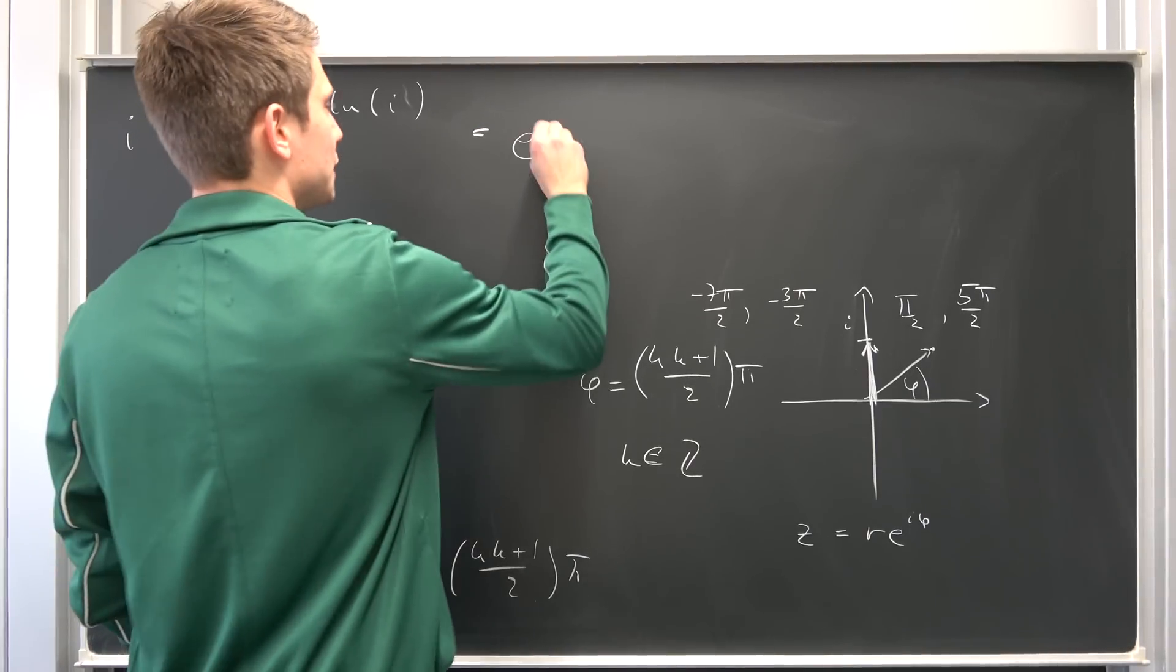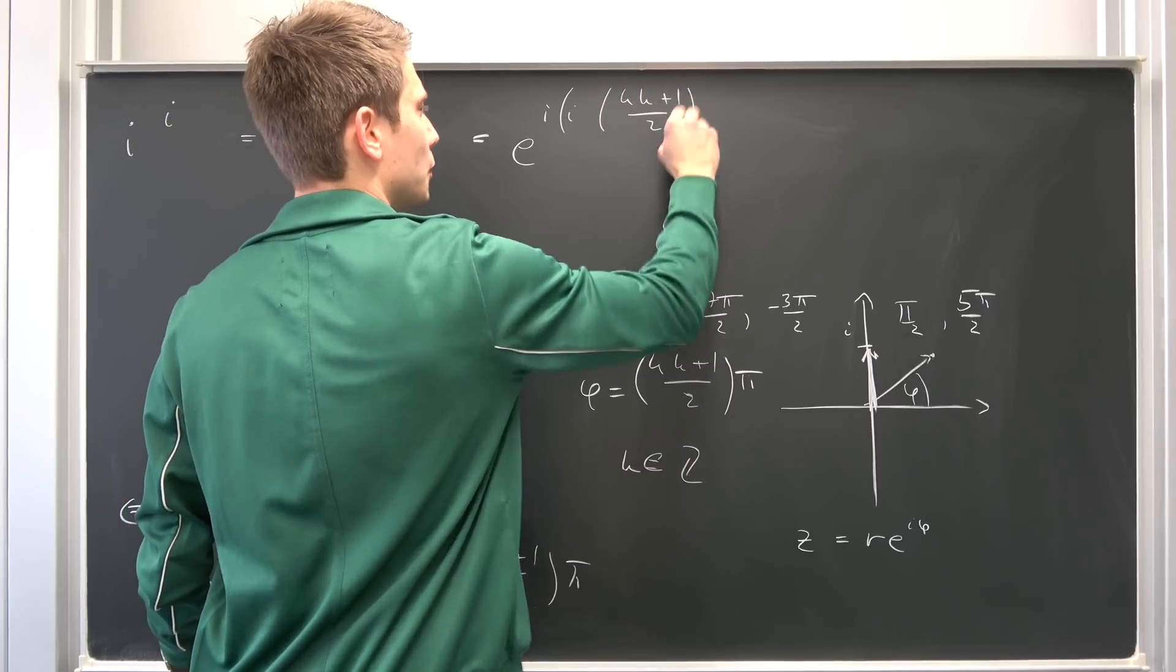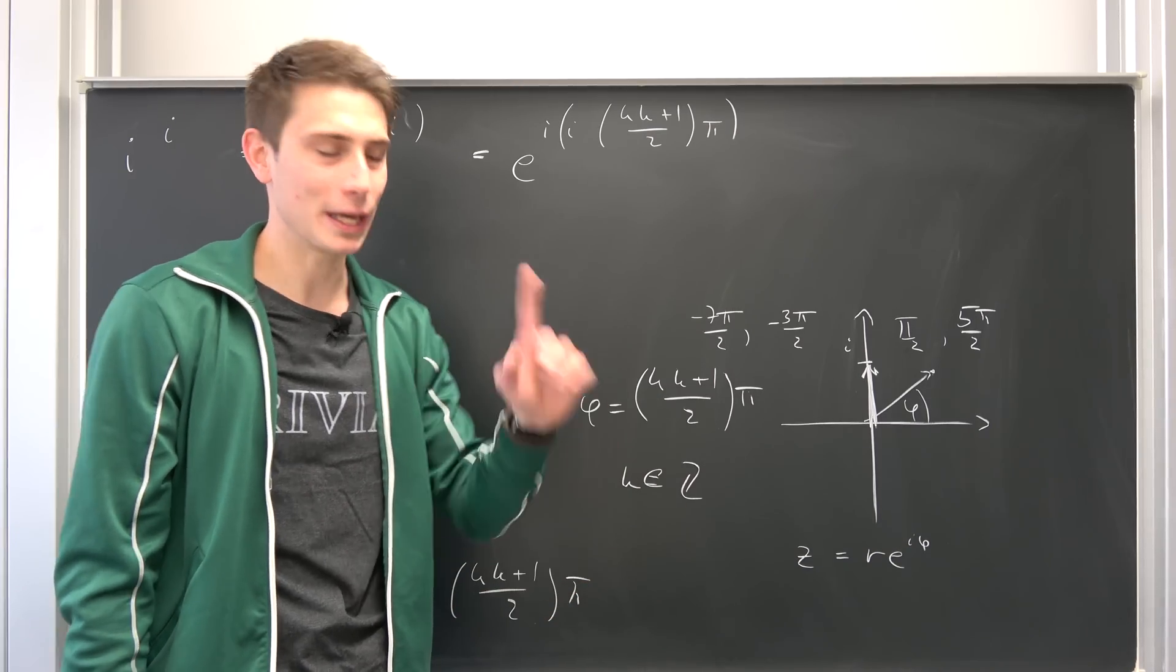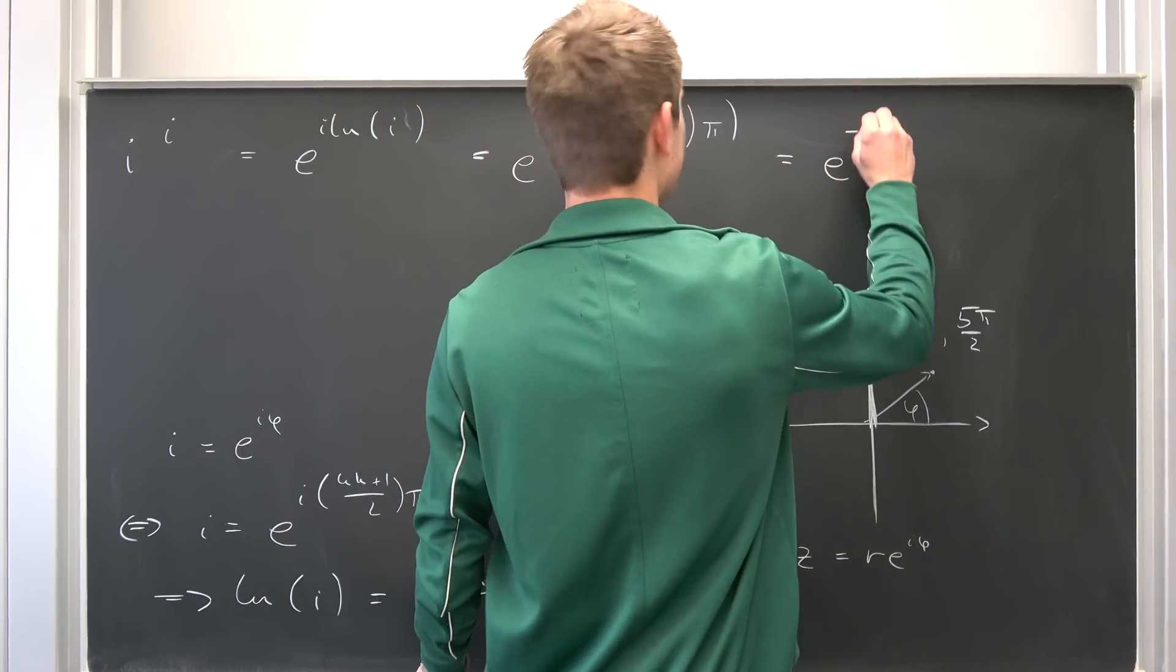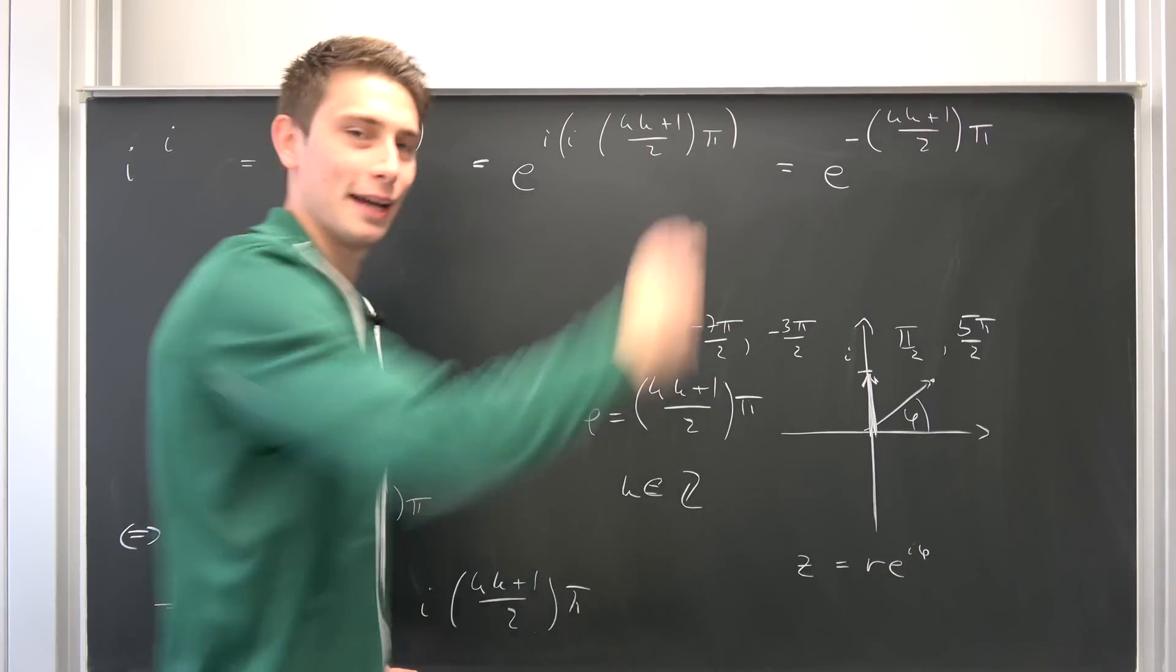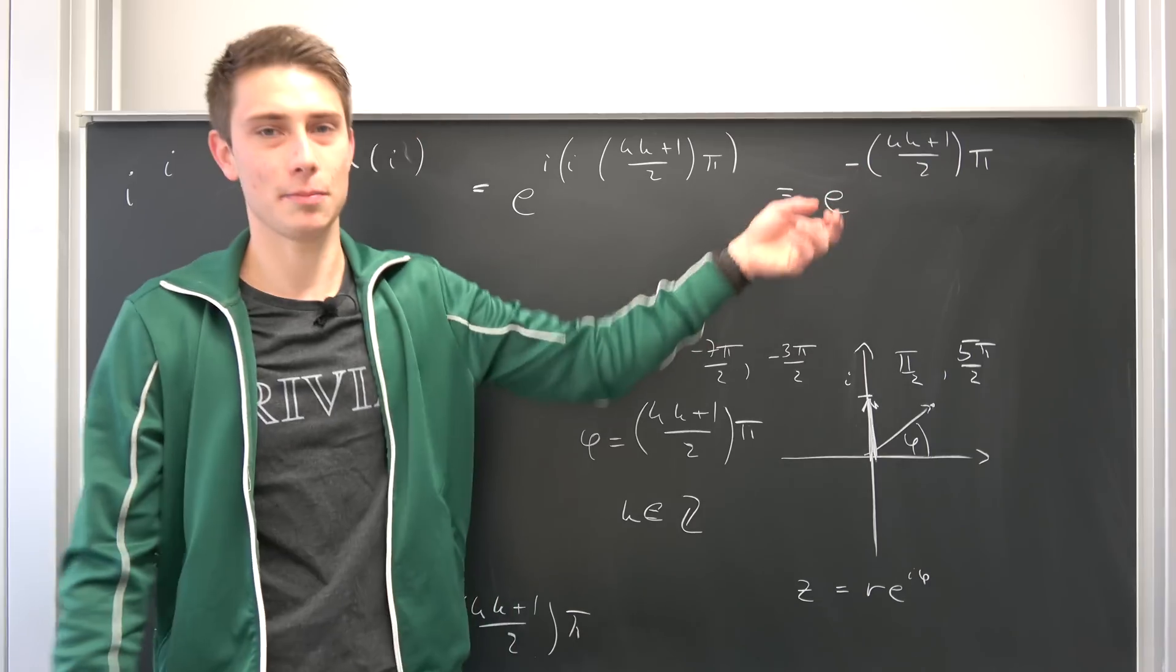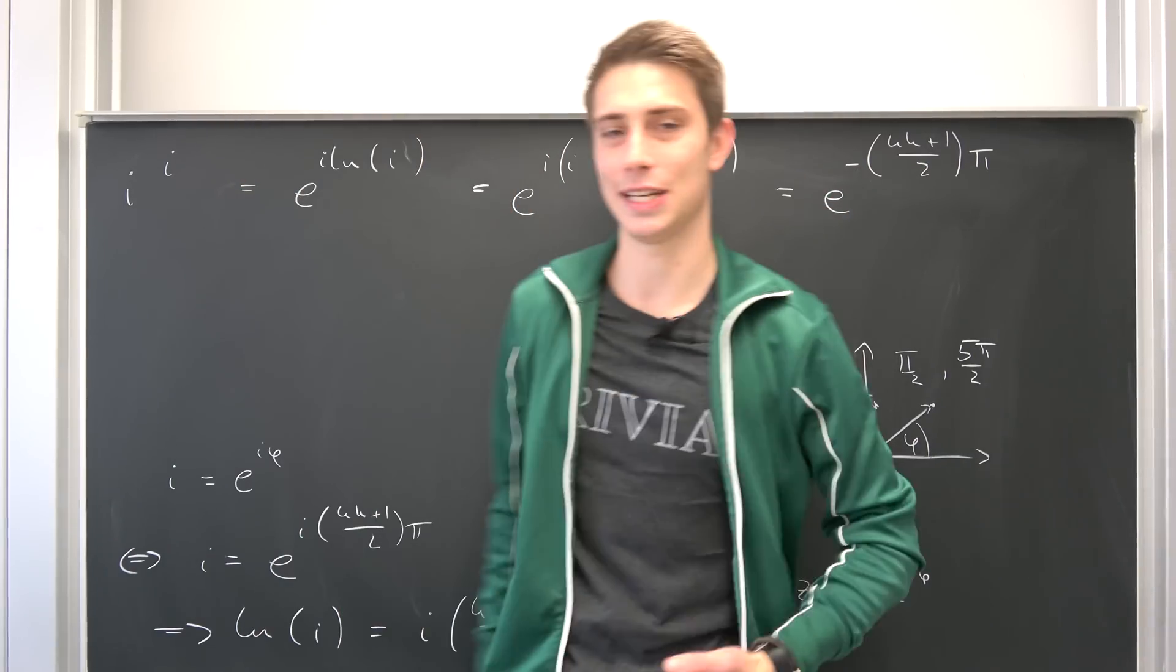So we end up with e to the i times i times 4k plus 1 over 2 times pi. And here's the really cool thing: by definition i times i is going to be negative 1. We are keeping it real my dudes and dudettes. So we get e to the negative 4k plus 1 over 2 times pi, and there we go, this already does the trick. So this is really quite cool. Imaginary to the imaginary power is going to end up in something real. So that's quite beautiful, infinitely many real values at that. That's so Gucci.